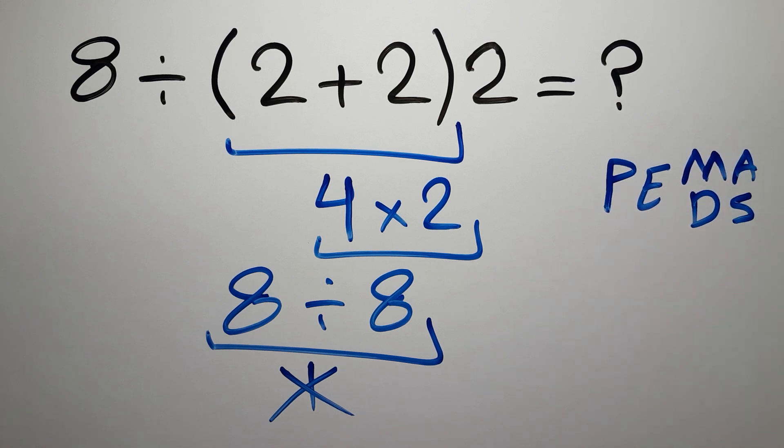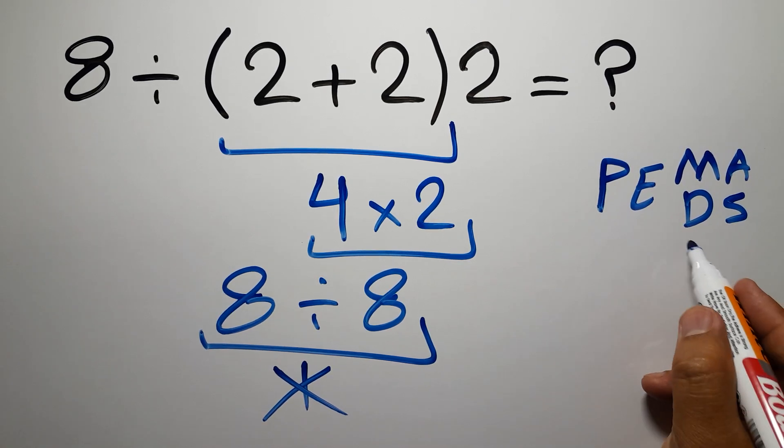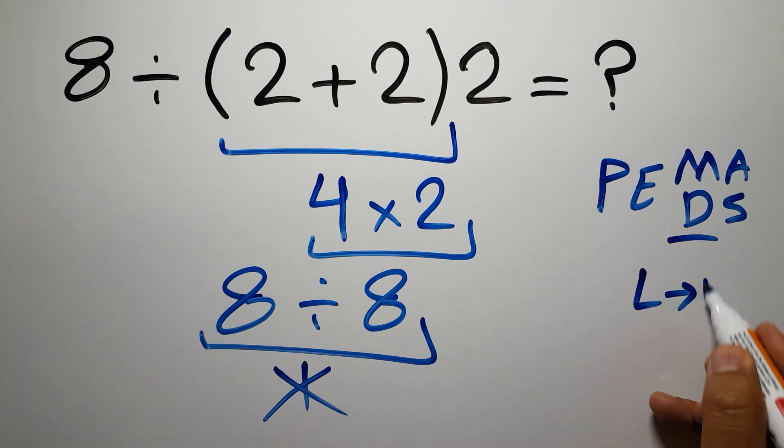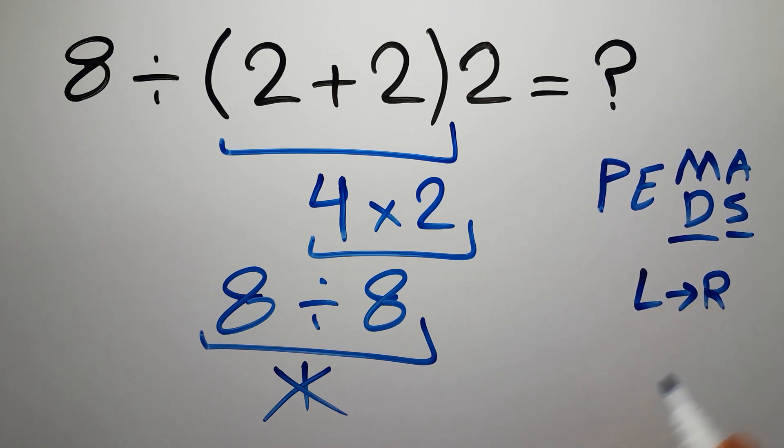And finally addition or subtraction. Remember that multiplication and division have equal priority, and we have to go from left to right, and the same applies to addition and subtraction.